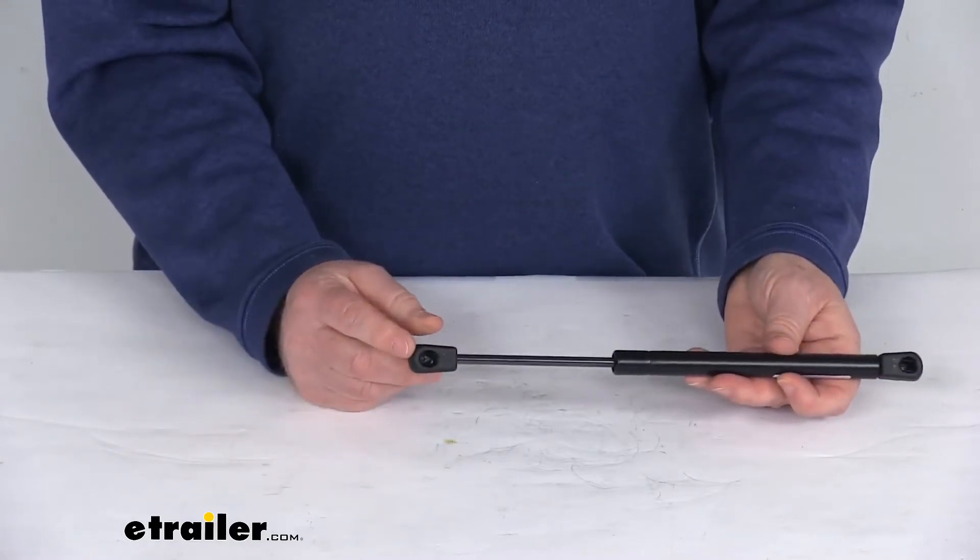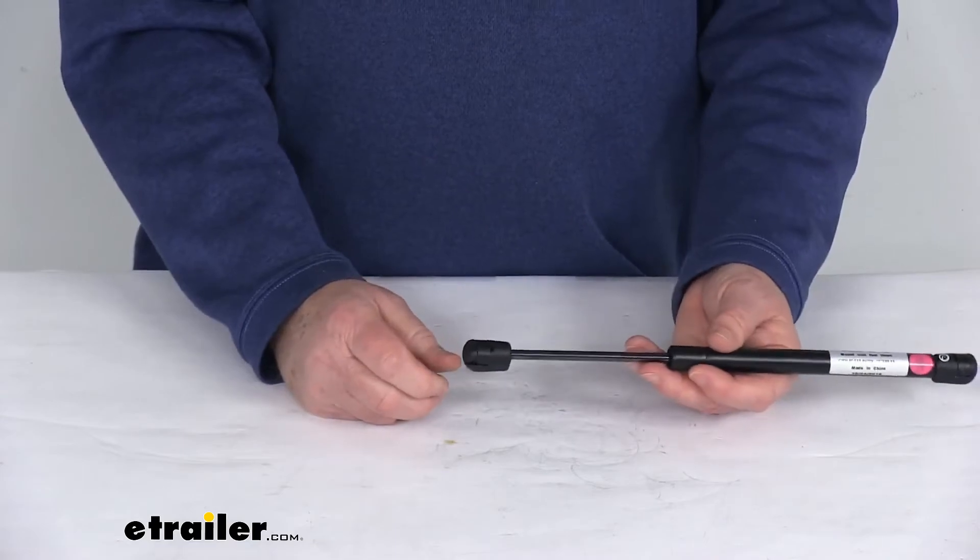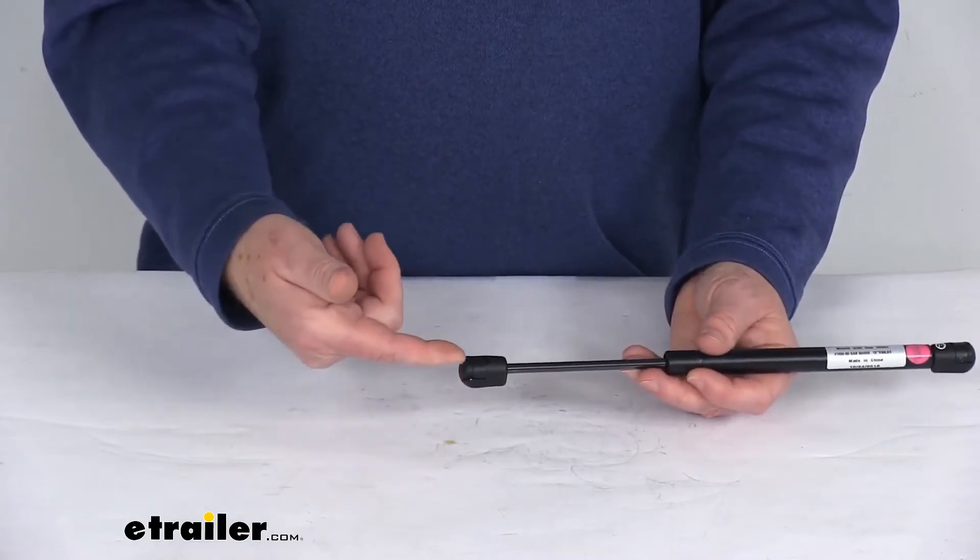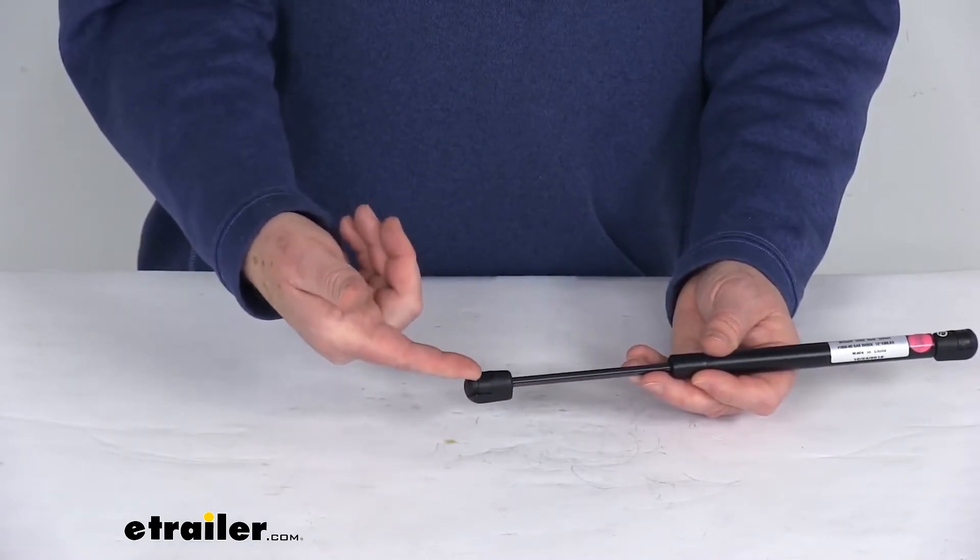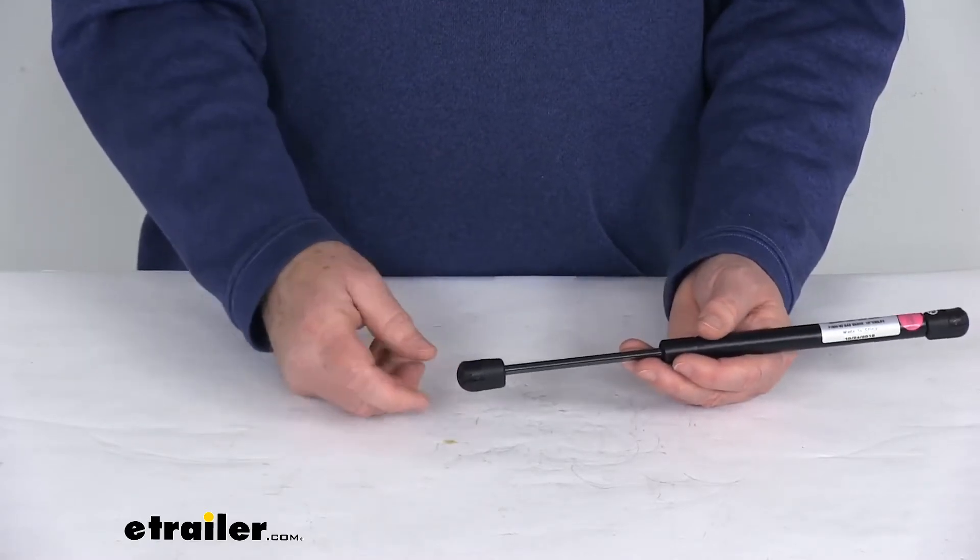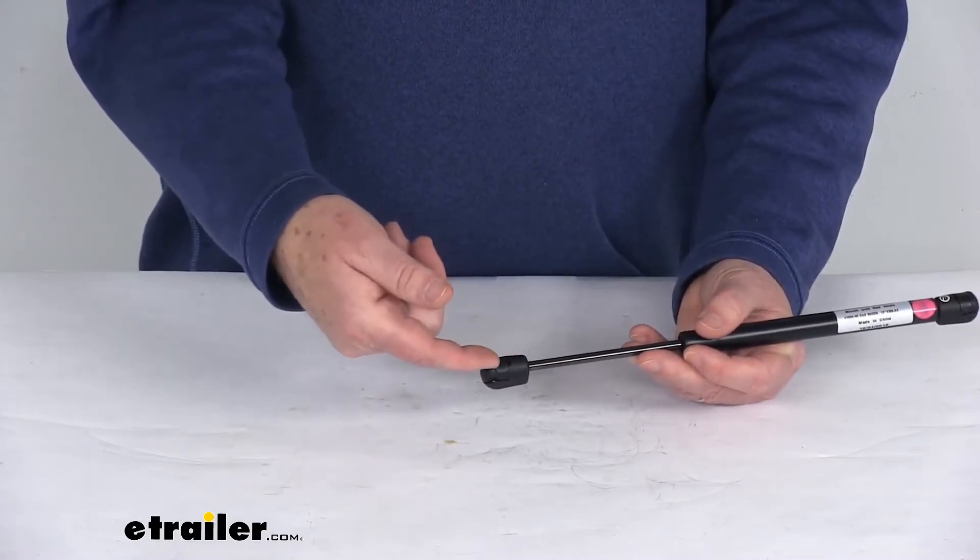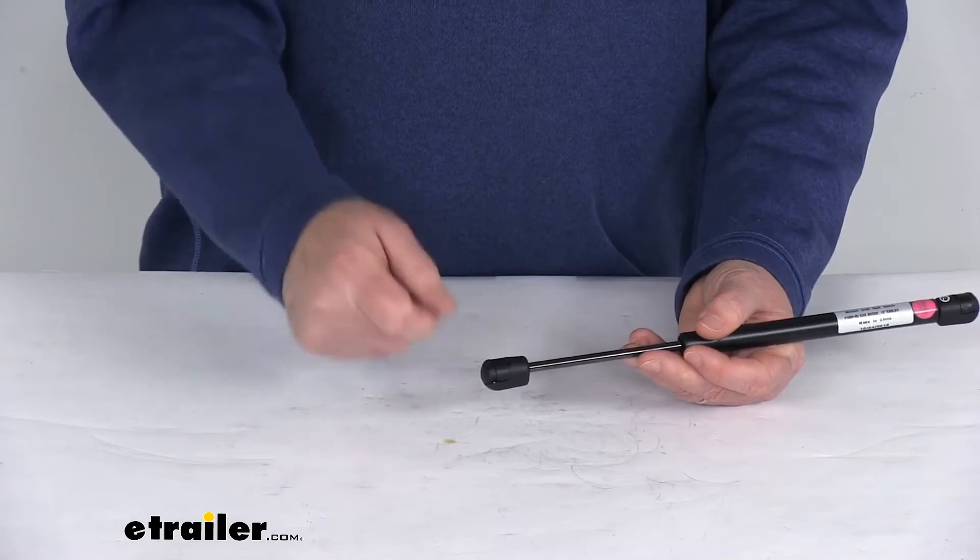The connection type is a 10 millimeter ball socket. When you go to install this, what you'll do to remove the old one is just put a flat tip screwdriver underneath the clip here, pop that clip open, and then you can remove the old one from your boat. Then what you'll do to install this one is put the screwdriver under the clip and pop open the clip.